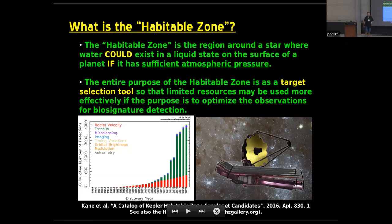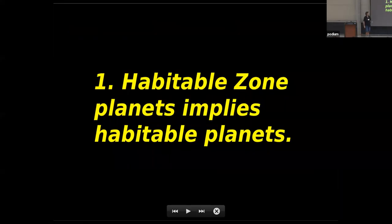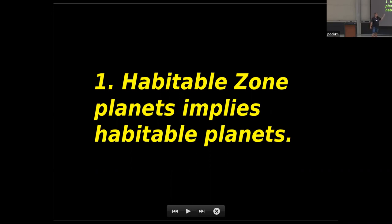For the rest of this brief talk I want to address a couple of common issues or questions and put them in the context of how we've defined the habitable zone. First: habitable zone planets implies habitable planets. I think this is part of the main disconnect that occurs. Sometimes my colleagues say to me, 'this is a media problem and we can't control the media.' But no — it's actually a problem on all sides.